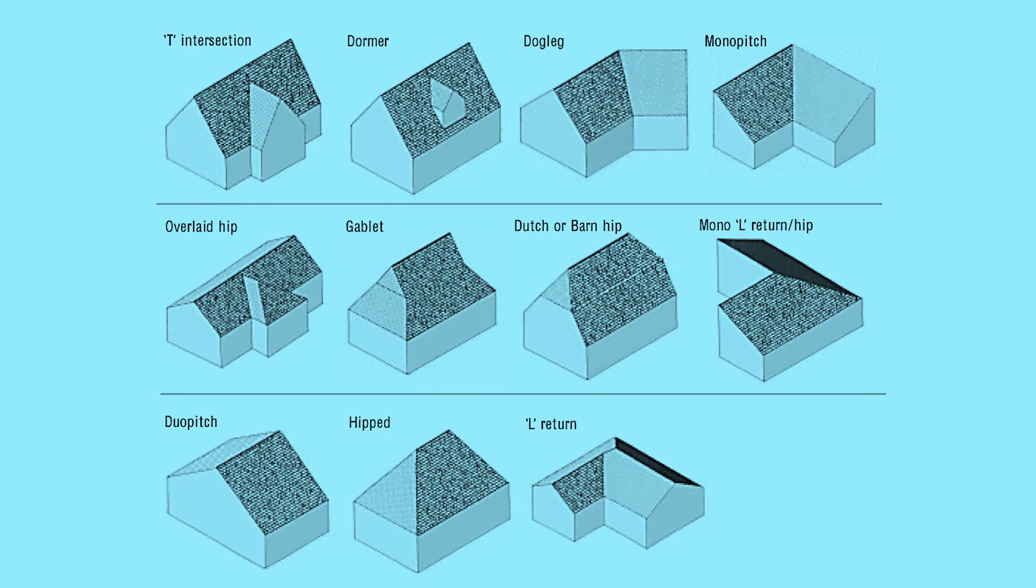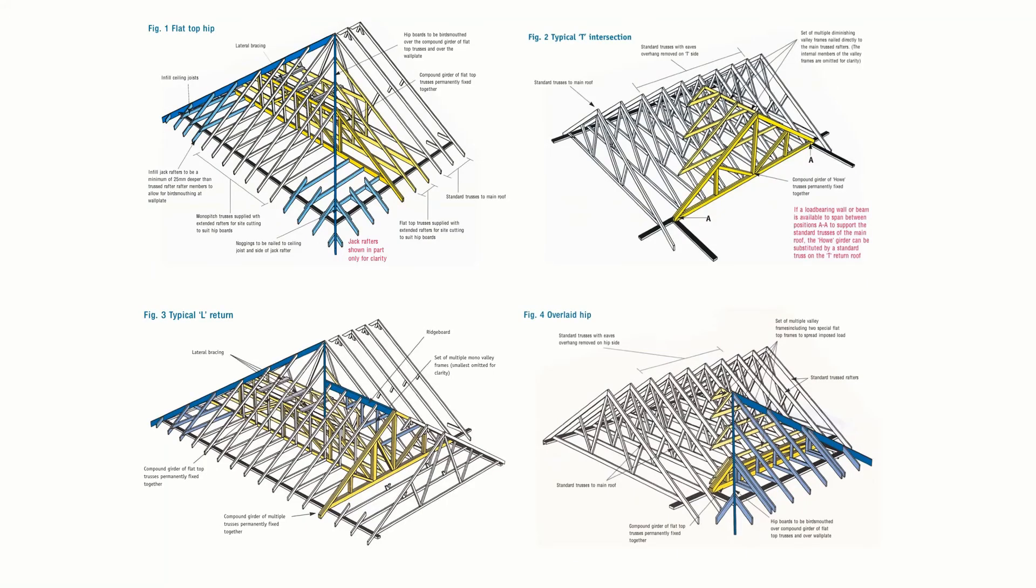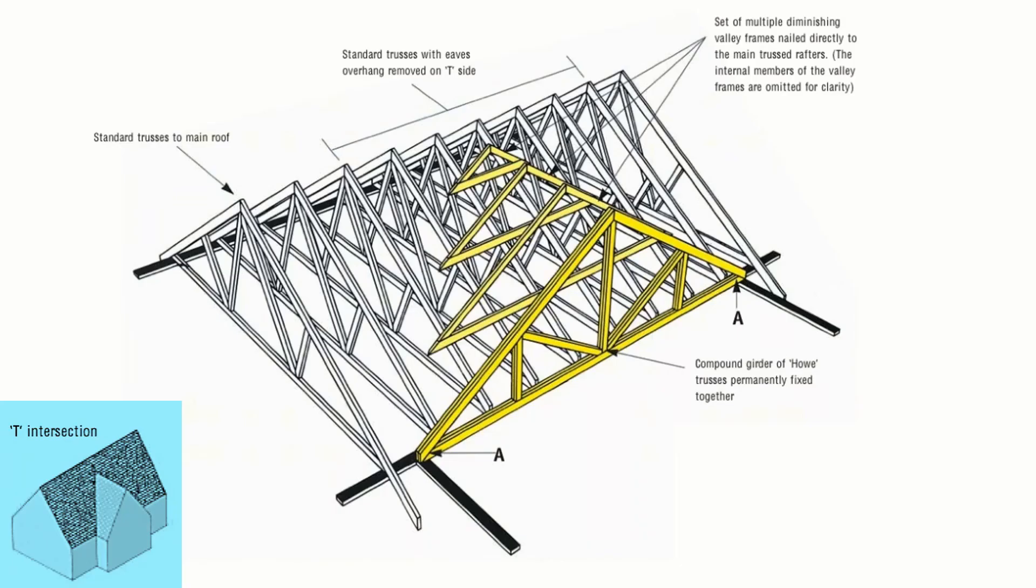And the ability to form different roof shapes or complex roof shapes using various trusses is almost limitless when it comes to pitched roof shapes. We can use all sorts of different types of trusses or different shapes of trusses to turn corners, to have intersections and gables. And if we look at a couple of the details of that, we can see that using different types of trusses or different types of rafters in unison, we can form a flat top hip or an L return or a T intersection. We'll look at the T intersection a little bit more detail a little bit more closely.